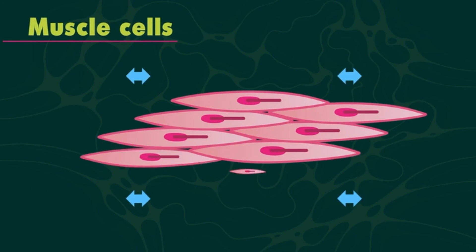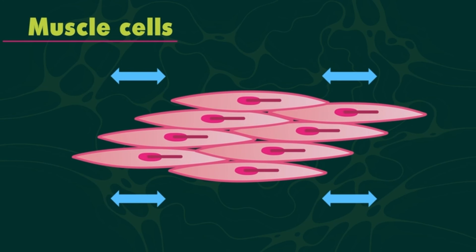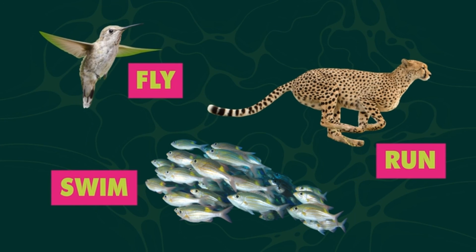Muscle cells are full of long protein filaments that can slide past each other to contract the muscle, making it possible for animals to swim, fly, or run.